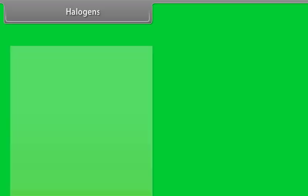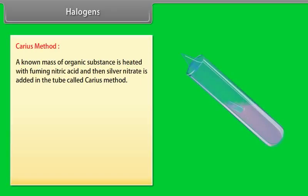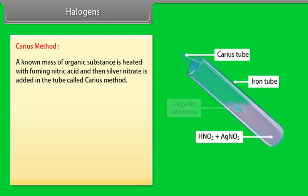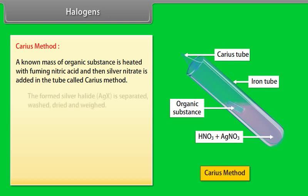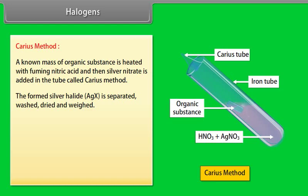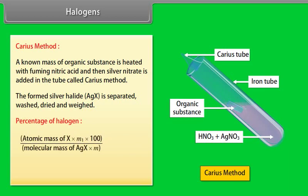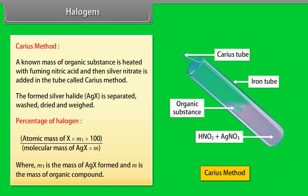Halogens — Carius method: a known mass of organic substance is heated with fuming nitric acid and then silver nitrate is added in the tube. The formed silver halide is separated, washed, dried, and weighed. Percentage of halogen = (atomic mass of X × M₁ × 100) ÷ (molecular mass of AgX × M), where M₁ is the mass of AgX formed and M is the mass of organic compound.